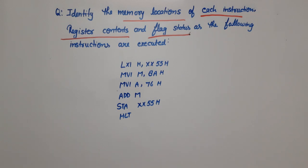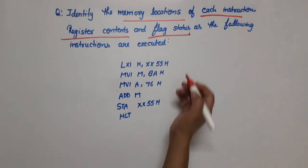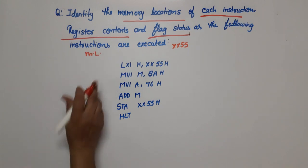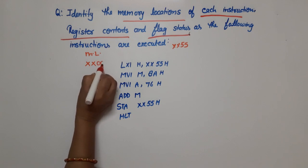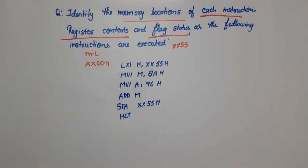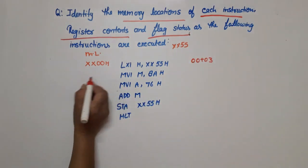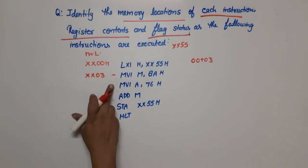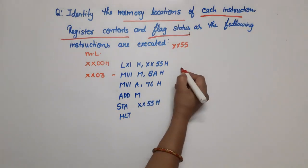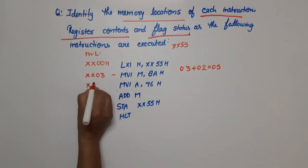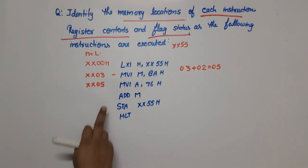I start one by one. First I find the memory location. You can take any starting location — I use XX00H here. The first instruction is LXI, which is a three-byte instruction, so the next location is XX00H + 03H = XX03H. MVI is a two-byte instruction, so its location is XX03H + 02H = XX05H. The next MVI instruction's location will also be XX05H.